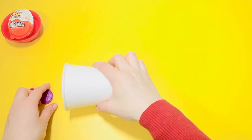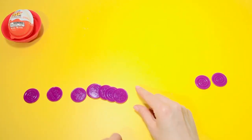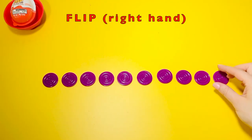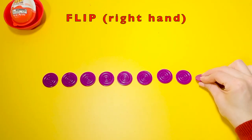Game number three: position your coins in a straight line. Use pincer grasp and flip your coins using your right hand.